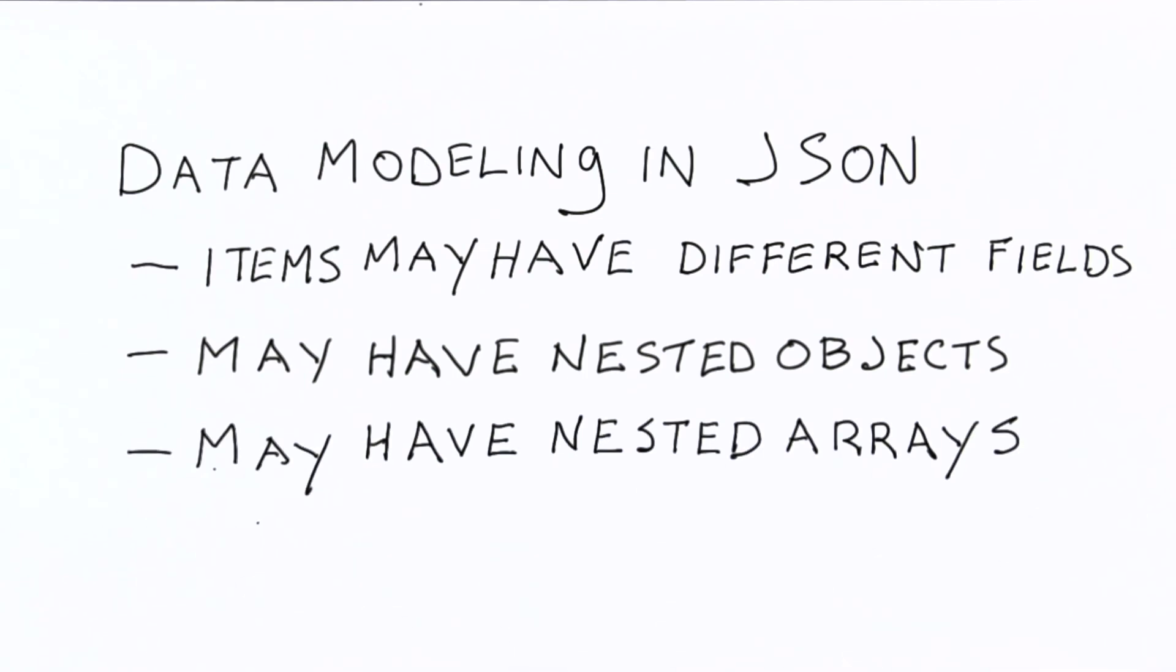We can also nest arrays. So, a field may have a value of an array. And that array may have as its elements other JSON objects, individual values, or other arrays.